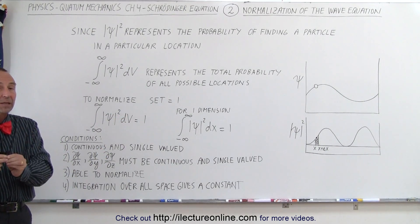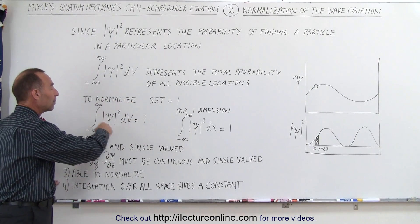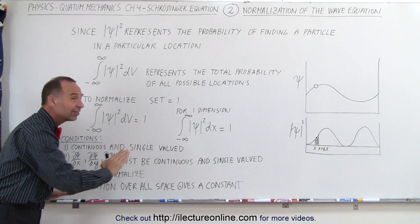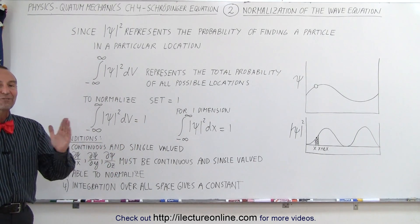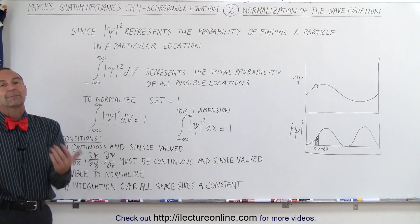That's a very important aspect of the probability density function. Finally, when we integrate the probability density function over all of space, it has to be a finite constant. If it's infinite, then it cannot be normalized.